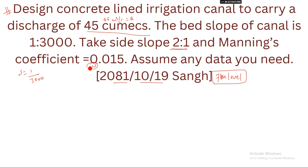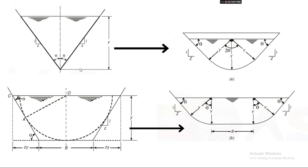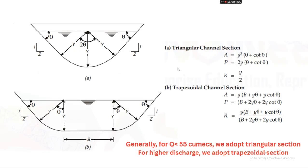Generally when we visualize the section we visualize it like a rectangle, but if we build a lined canal in this way there will be the possibility of silting in the corners. So generally we do not prefer this type of section. Instead, this is converted to a triangular section or a trapezoidal section — we prefer these types.